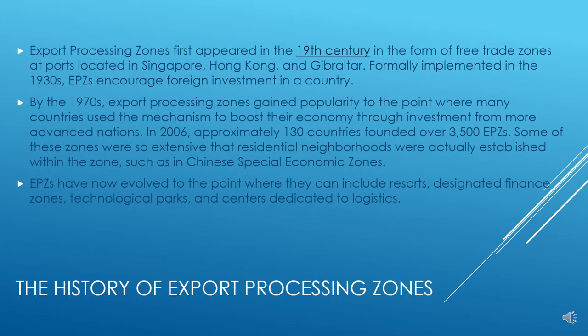Export processing zones first appeared in the 19th century in the form of free trade zones at ports in Singapore, Hong Kong, and Gibraltar. Formally implemented in the 1930s, EPZs encouraged foreign investment. By the 1970s, they gained popularity with many countries using the mechanism to boost their economy through investment from more advanced nations. In 2006, approximately 130 countries founded over 3,500 export processing zones, some so extensive that residential neighborhoods were established within them, such as in Chinese special economic zones.